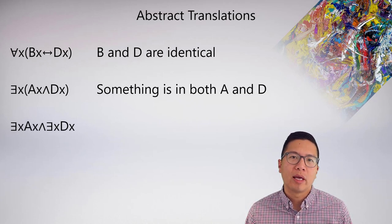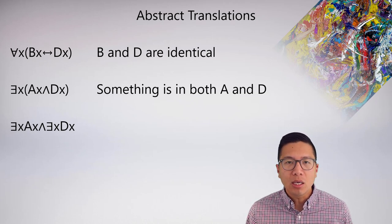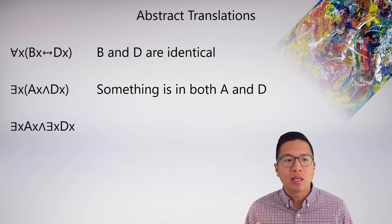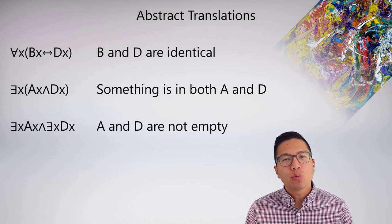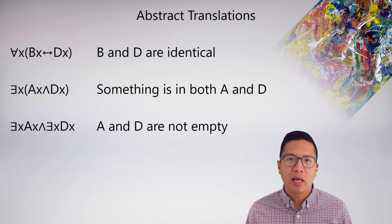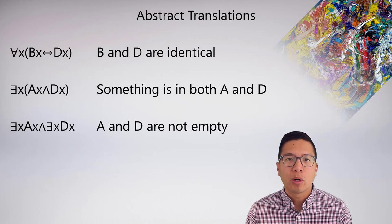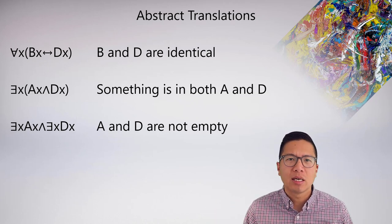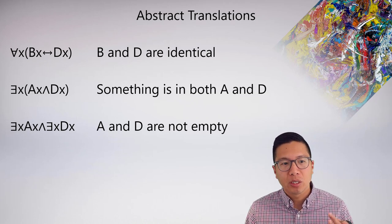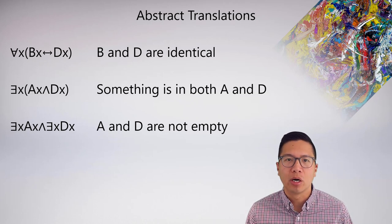Compare that to the next example: 'there exists x, ax, and there exists x, dx.' Here I'm not necessitating that what is the a and what is the d are different — in fact, they could be the same. My abstract translation has to be open to that. A nice way of expressing this is just to say a and d are non-empty; they don't have no members. You could also just abstractly translate it as: something is an a and something is a d, which is equivalent to saying a and d are non-empty.